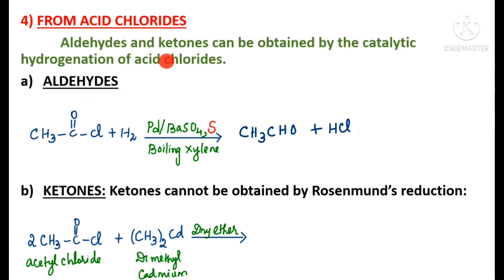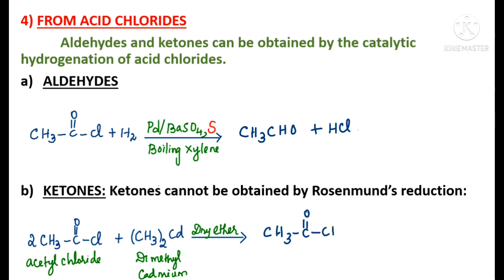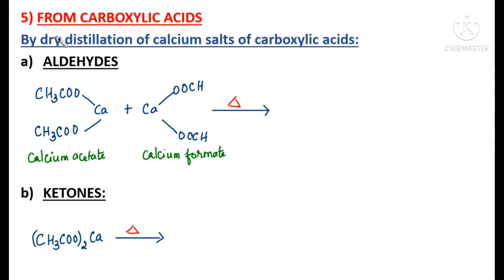Ketones cannot be obtained by Rosenmund's reduction. Instead, ketones are prepared by treating acetyl chloride with dimethyl cadmium in the presence of dry ether. This gives acetone, CH3-C(=O)-CH3, plus cadmium chloride (CdCl2).